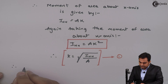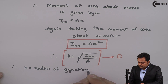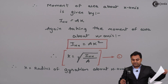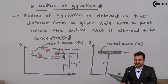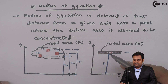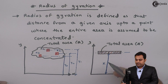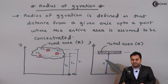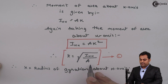Therefore k is equal to the radius of gyration about the x-axis. As written in the definition, radius of gyration is that distance from a given axis — here the x-axis — up to a point where the entire area is assumed to be concentrated. The area capital A is at a distance of k, and this k is called the radius of gyration. The formula is: k equals root of I-xx upon area.